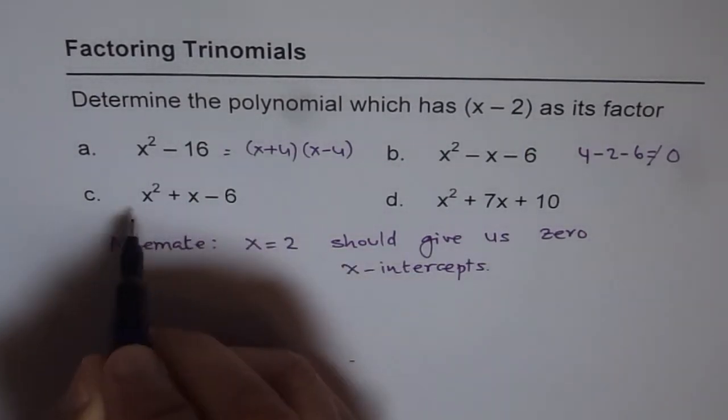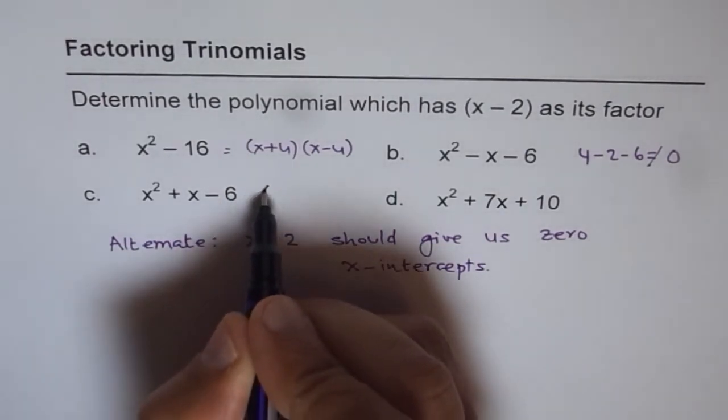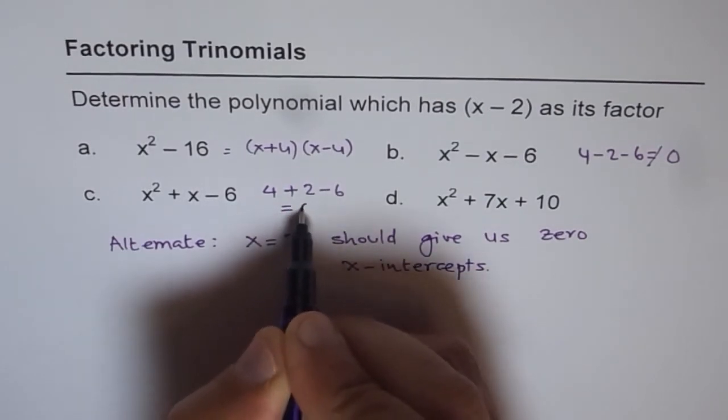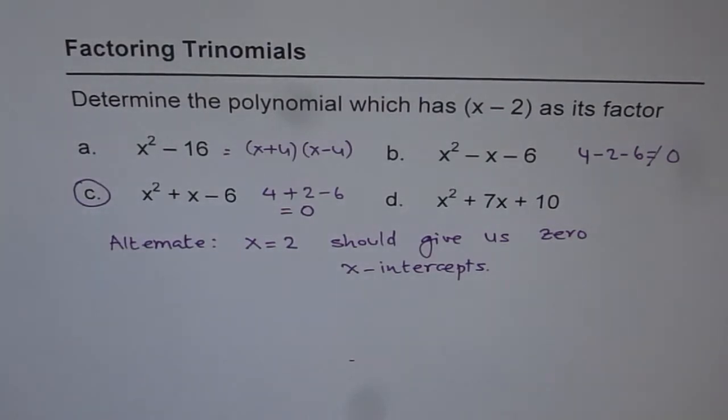Let's try it here now. So if I'm putting 2 here, so 2 squared is 4 and then plus 2 minus 6. Well, this is equal to 0 and therefore, that is our solution. So we got one of them.